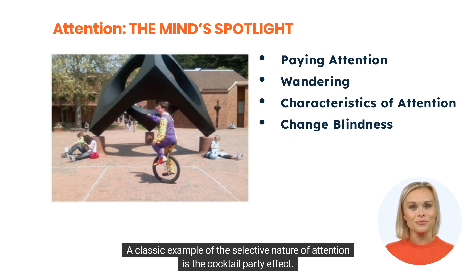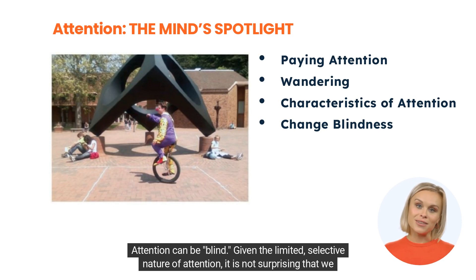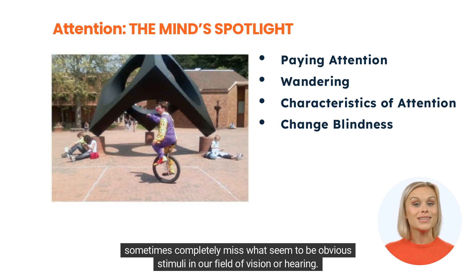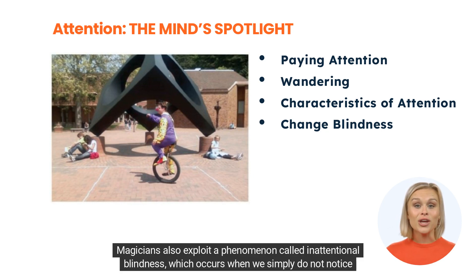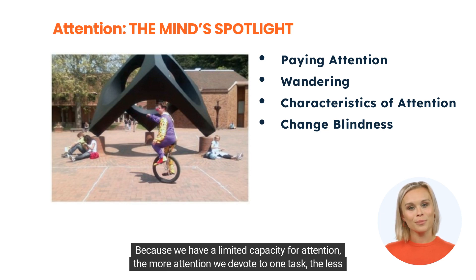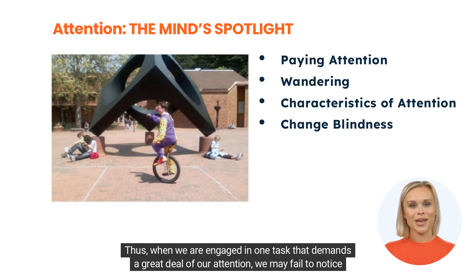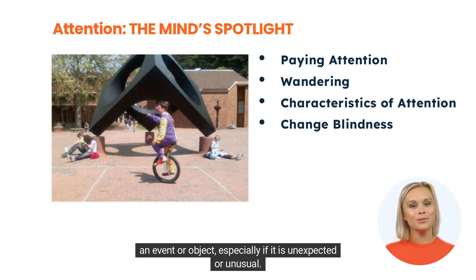A classic example of the selective nature of attention is the cocktail party effect. 3. Attention can be blind. Given the limited, selective nature of attention, it is not surprising that we sometimes completely miss what seem to be obvious stimuli in our field of vision or hearing. Magicians also exploit a phenomenon called inattentional blindness, which occurs when we simply do not notice some significant object or event in our clear field of vision. Because we have a limited capacity for attention, the more attention we devote to one task, the less we have for another. Thus, when we are engaged in one task that demands a great deal of our attention, we may fail to notice an event or object, especially if it is unexpected or unusual.